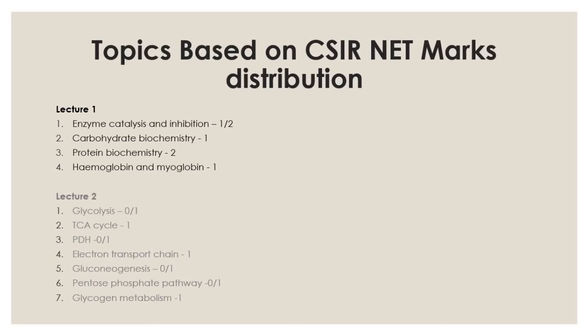The numbers written after every single topic name represent the total approximate number of questions you will get from that topic in the CSI NET exam, based on a study of the last 10 CSI NET question papers.